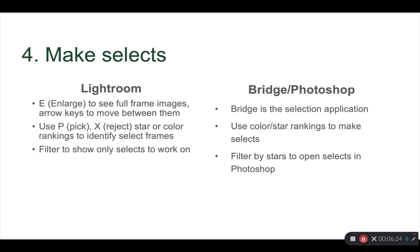Step four: figure out which pictures you want to keep and work on. In Lightroom, I hit E to enlarge and see a full-frame image, then use the arrow key to move through images quickly. I use P for pick to keep, or X for reject. You can also use stars or color rankings to identify select frames, then filter to show only the selects. In Bridge and Photoshop, same concept — Bridge is your selection application, using color and star rankings to make selects and filter before opening in Photoshop.